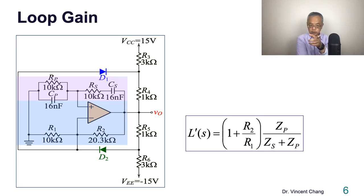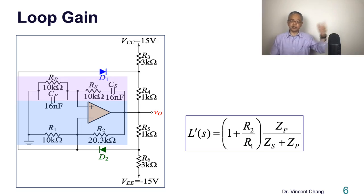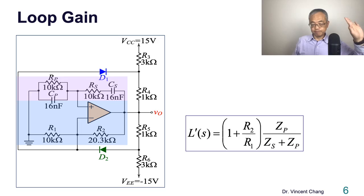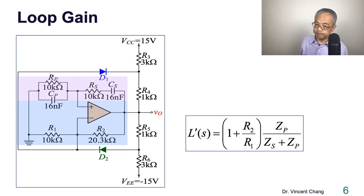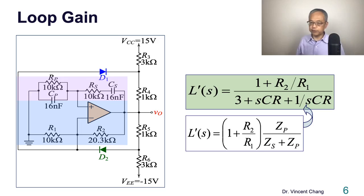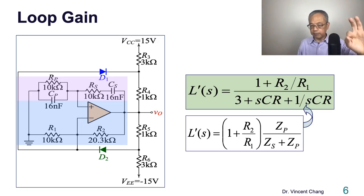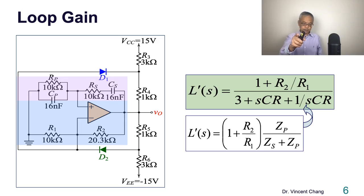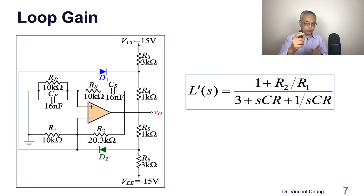Now let's focus on the core and the loop gain. This is something I showed you in the previous lecture. The first term, 1 plus R2 over R1, is generated by the amplifier part. The second term, the ratio between Zs and Zp, corresponds to the purple frequency selective network. If you plug in the series combination of RC and the parallel combination of RC, this is what you have. So this is the starting point of this lecture.